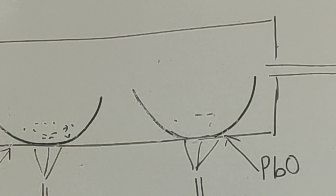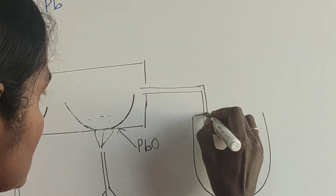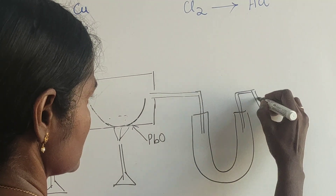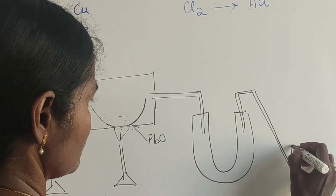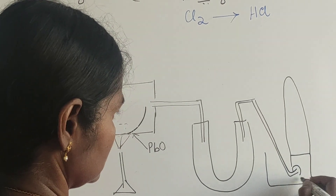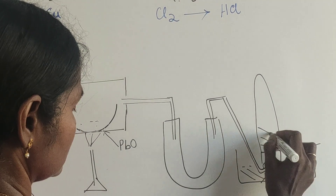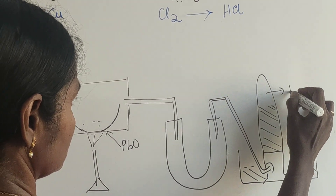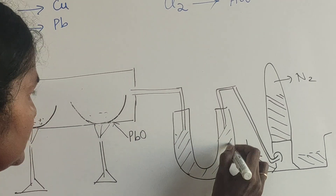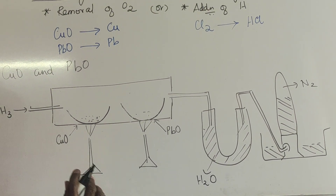So the metal gets reduced. Meanwhile, there is also water that is formed and nitrogen gas is also one of the products. Here you have water which condenses, and the reactions go this way.